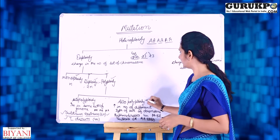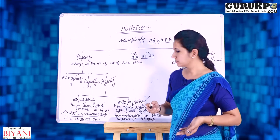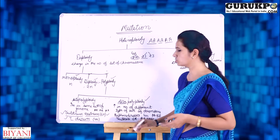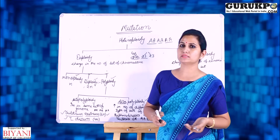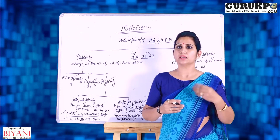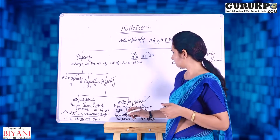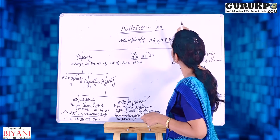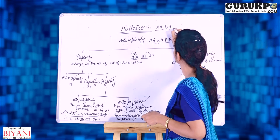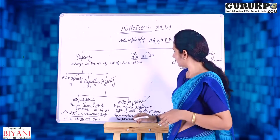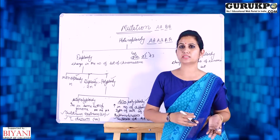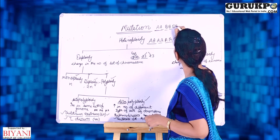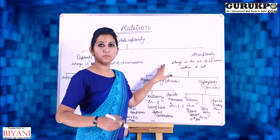Now moving on to allopolyploidy — 'allo' means different. Here, the increase in the number of different types of chromosome sets occurs. A common example is Raphanobrassica, made by crossing Raphanus sativus and Brassica oleracea. Raphanobrassica is tetraploid, with two sets from Raphanus and two sets from Brassica. Another example is Triticale, made by crossing Triticum aestivum and Secale cereale; it is hexaploid, with two sets from Triticum and four sets from Secale.